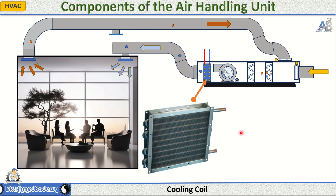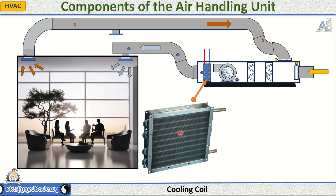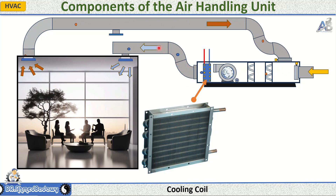5. Coils: These are heat exchangers used for heating or cooling the air. There are usually two types of coils. Cooling coils remove heat from the air and reduce humidity by allowing chilled water or refrigerant to absorb heat. Heating coils add heat to the air using hot water, steam, or electric heating elements.